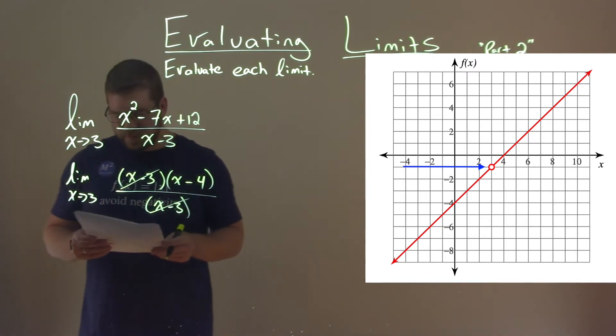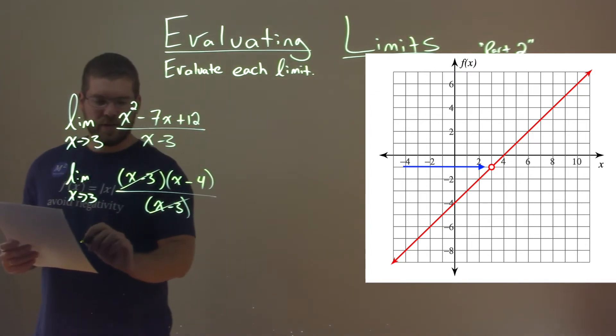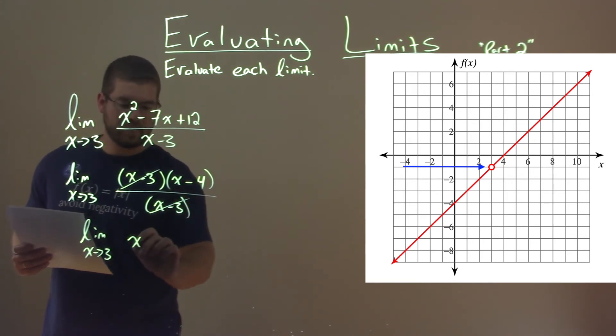The x minus 3s will cancel, and so we're left with the limit as x approaches 3 of just what's left, x minus 4.